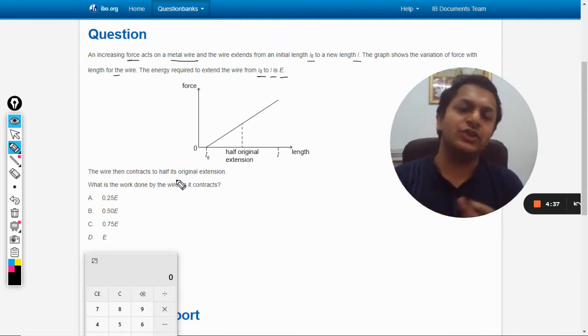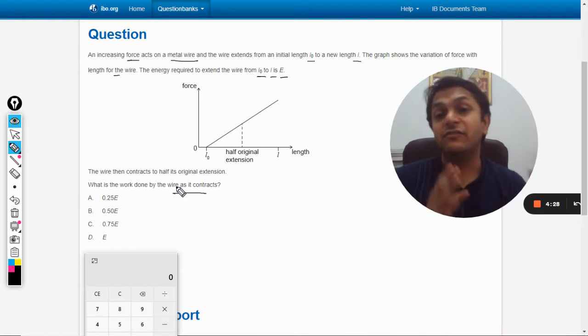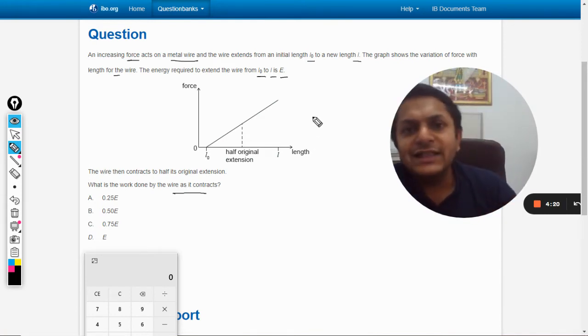What is the work done by the wire as it contracts? We have to find the work done while the wire is contracting, so it is moving from one extreme position towards the mean position but it is in the midway of that.